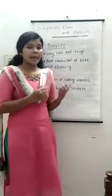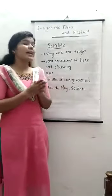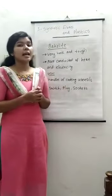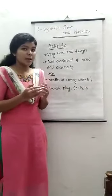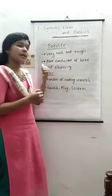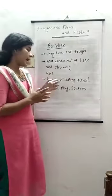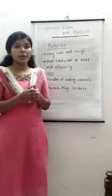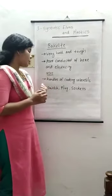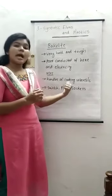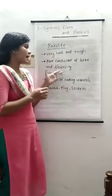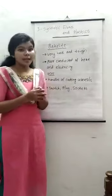The next one is bakelite. Bakelite is a very hard and tough plastic and it is a poor conductor of heat and electricity, which means it does not conduct heat and electricity. This property is utilized for making the handles of cooking utensils like pressure cookers and frying pans. It is also used for making switches, plugs, and sockets, because bakelite protects us from electric shocks as it is a bad conductor of electricity.